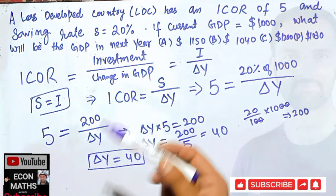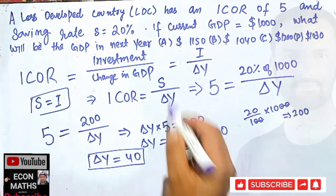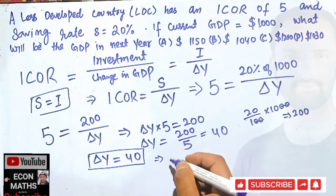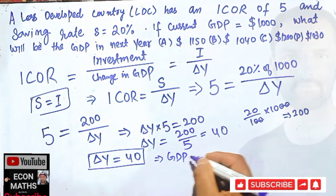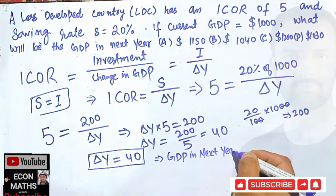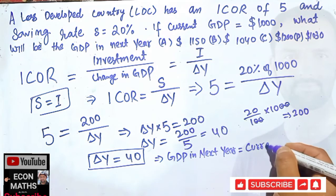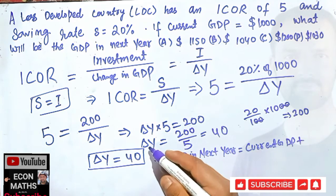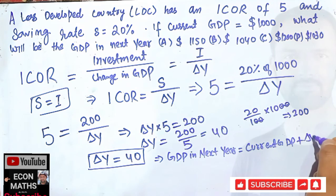So our GDP will change by 40. Now what is our original GDP, the current GDP? So GDP in next year is equal to current GDP plus change in GDP, that is delta Y. So current GDP was 1000,